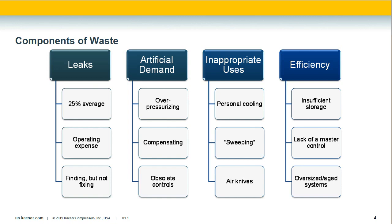Inappropriate uses occur any time you're using compressed air when an alternative means could achieve the same effect. A big example is employees using compressed air for personal cooling when fans would be far more efficient. The efficiency slice — 50% — is where you can improve the most by addressing problem areas within your compressed air system, including insufficient storage, lack of a master controller, and inherent system design inefficiency.